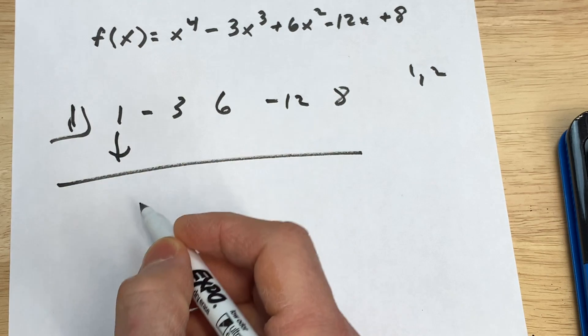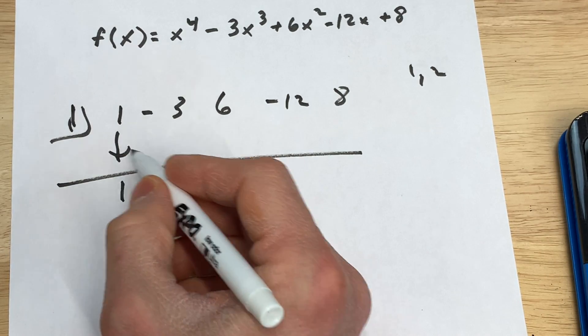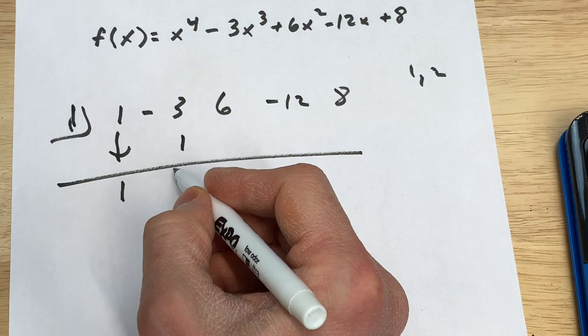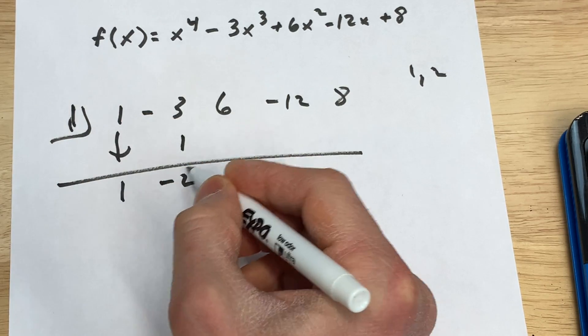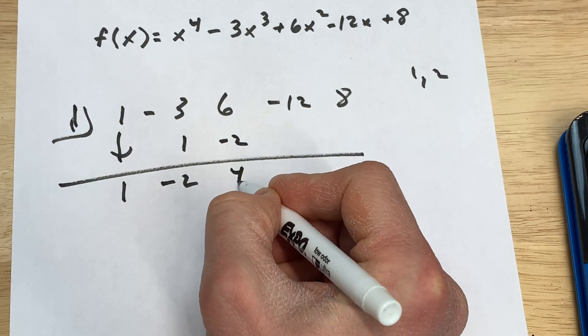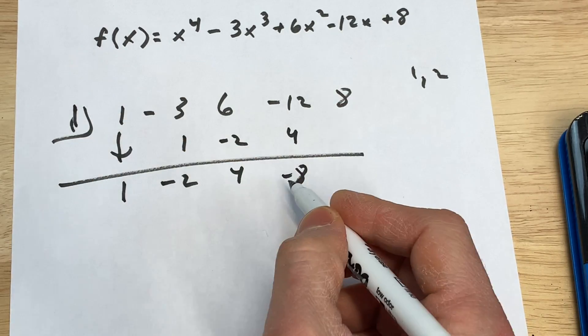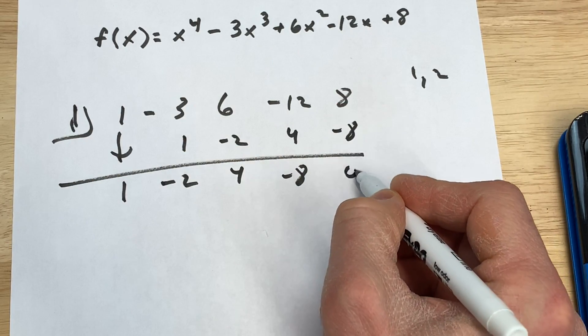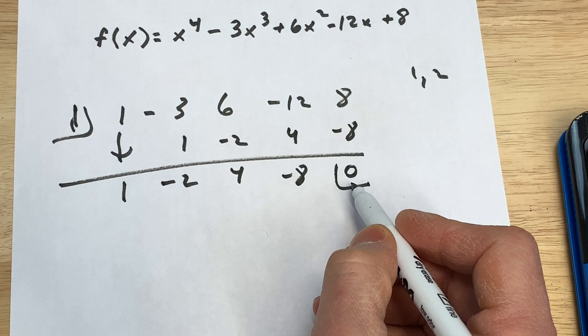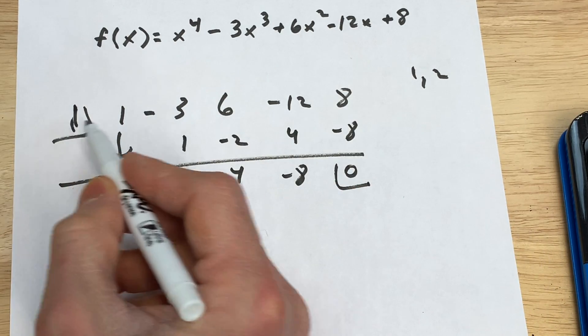We bring down that first term and we multiply on the diagonal. 1 times 1 is 1. Add straight down, that's negative 2. Multiply on the diagonal, add straight down. Multiply on the diagonal, add straight down. Multiply on the diagonal, add straight down. Now you can see you're getting 0 here, which tells us that 1 is a zero.